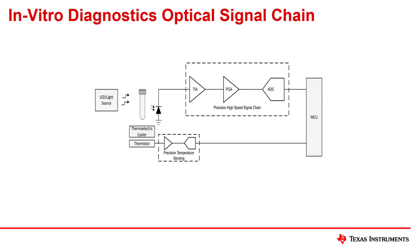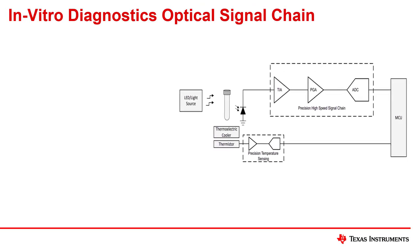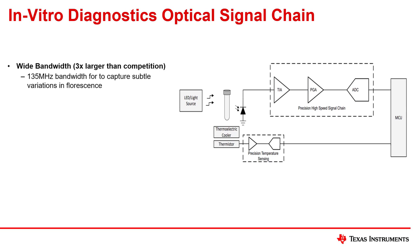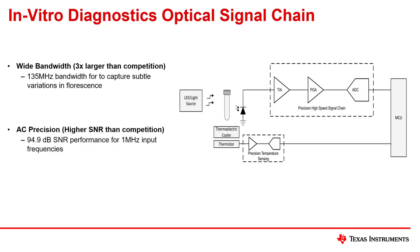The ADS9219 can be used in in vitro diagnostic systems to measure the fluorescence of a patient's fluid sample. A wide bandwidth is a key requirement to ensure the subtle variations in fluorescence are detected. 94.9 dB SNR at 1 MHz ensures strong AC precision, which is needed to ensure accurate measurements of such sensitive signals.